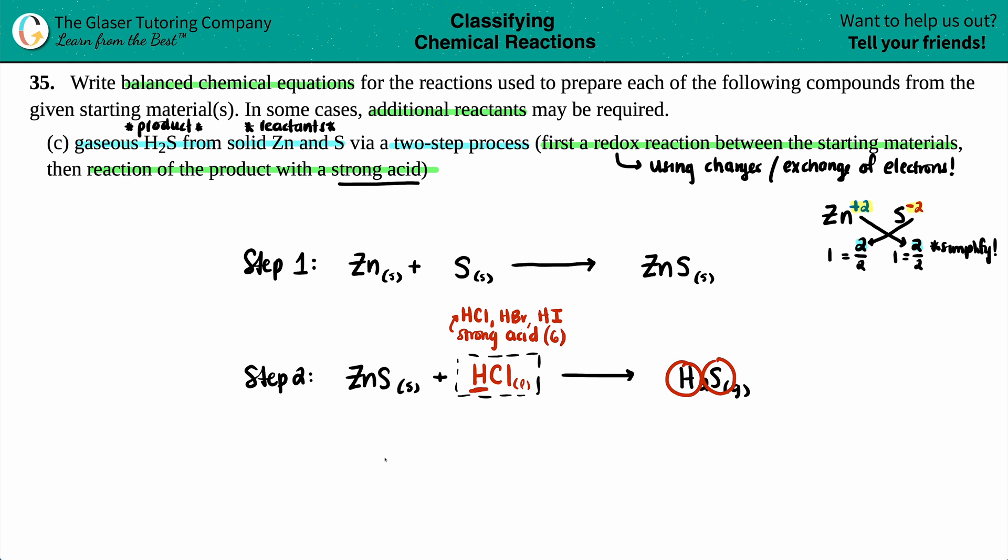Remember, with balanced equations, you have to have the same elements on both sides. So the H and the S are counted for on the product side. But where's the zinc and where's the Cl? We have to add that. This is a double displacement reaction because you have two compounds. ZnS is a compound. HCl is technically a compound. So double displacement. The outers go with outers. The Zn goes with the Cl. And the inners go with the inners. H2S.